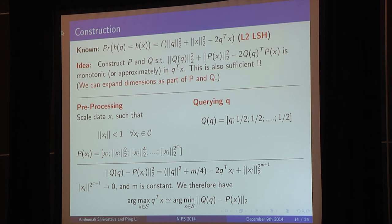So after sticking in p and q, the formula looks something like this. That is q of q norm whole square plus p of x norm whole square minus two times the inner product between the transform, asymmetrically transformed q and x. Now I know how to have a hash function which is monotonic in this expression. So can I choose p and q which makes this expression monotonic in q transpose x? And if I can do that, I'm essentially done. And this is, we can show that it's sufficient. And another idea that we can use is we can expand the dimension as a part of p and q. Why? Because locality sensitive hashing guarantees are independent of the dimensions. And so here is one transformation that works. So what you do is you first take your whole data in the collection and you scale it down so that every norm is less than one. Remember, it is not normalizing. Normalizing change the ordering of inner product, scaling doesn't.